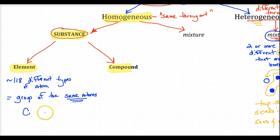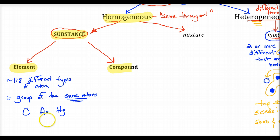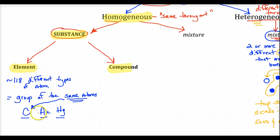Carbon is given C. Gold is given Au, from the Latin word aurum. Mercury is Hg, from Latin for liquid silver. These are different atoms denoted by different capital letters, and same atoms get the same symbol. What makes carbon unique from gold and silver? They have a unique number of protons. When you have the same number of protons, you are the same element.